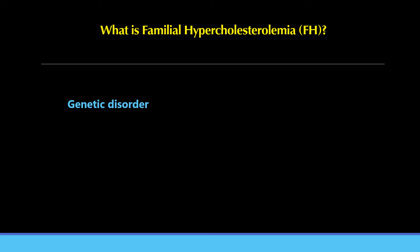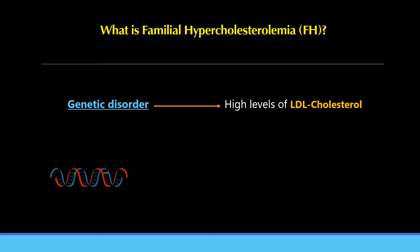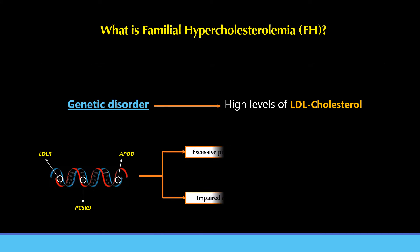What is familial hypercholesterolemia? Familial hypercholesterolemia, or FH for short, is a genetic disorder that causes high levels of LDL cholesterol, also known as bad cholesterol, in the blood. People with FH have a mutation in one of three genes that control cholesterol metabolism, resulting in excessive production or impaired removal of LDL by the liver.